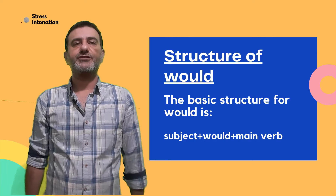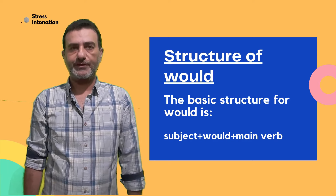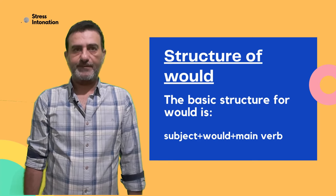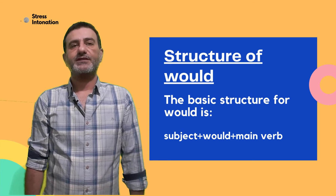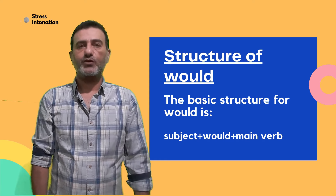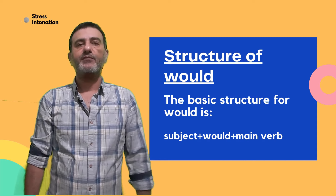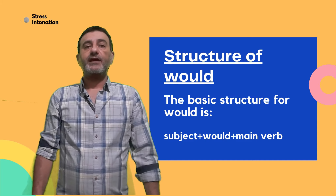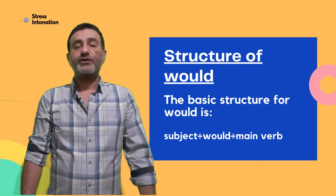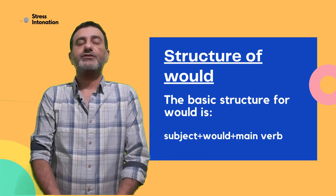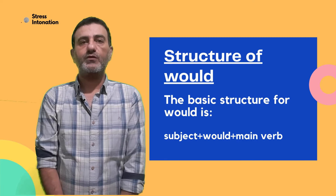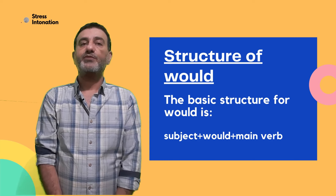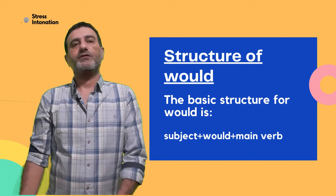Now let's talk about the structure of 'would'. The basic structure is subject plus auxiliary verb 'would' plus main verb. Note that the auxiliary verb 'would' is invariable — there is only one form: 'would'. The main verb is usually in the base form, like 'he would go'.